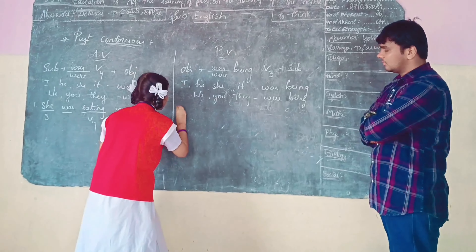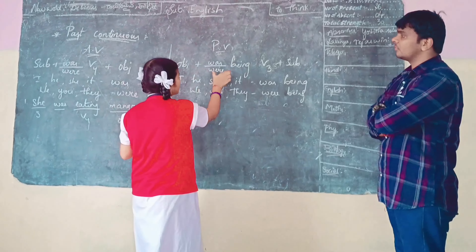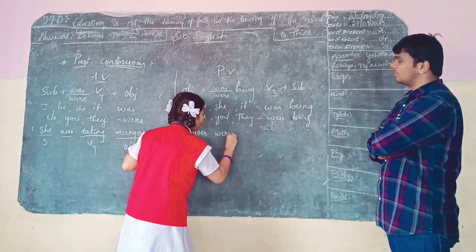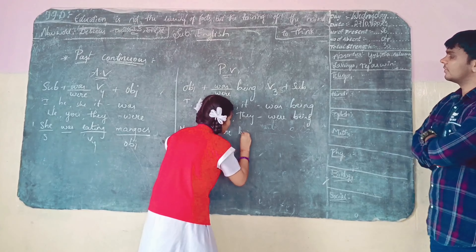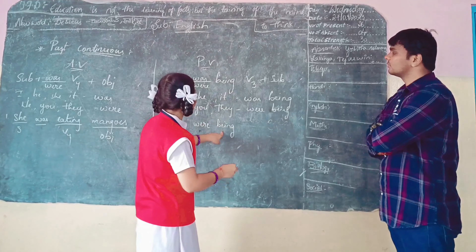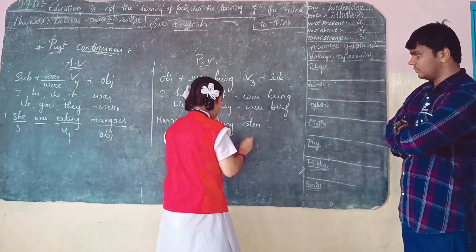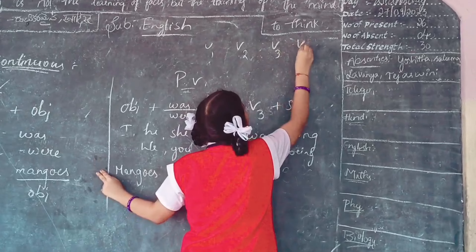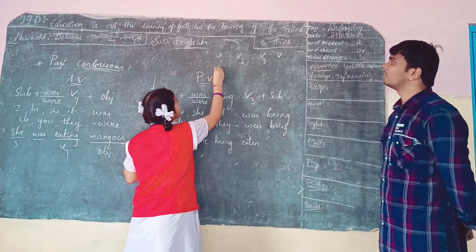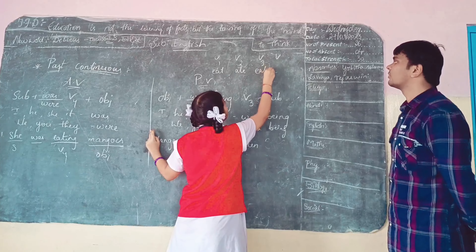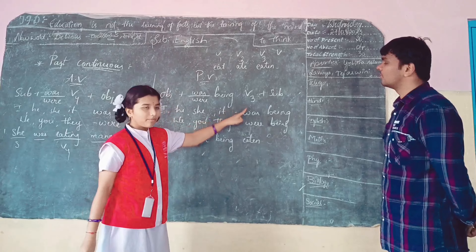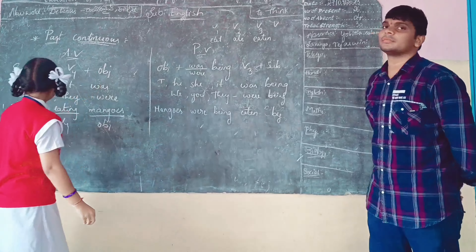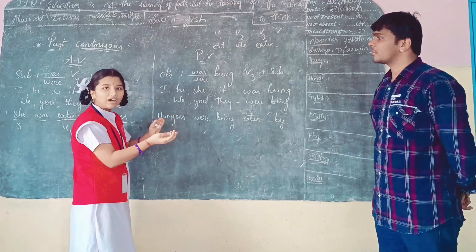We have to convert this sentence into passive voice. First we write the object: 'mangoes'. Mangoes are plural, so we write 'were'. Then we use 'being', followed by V3 of 'eat', which is 'eaten'. In the phrase, we write 'by'. 'She' converts into 'her' in passive voice. So the passive voice is: 'Mangoes were being eaten by her.'